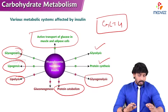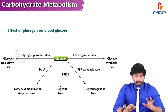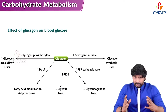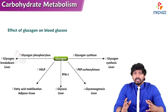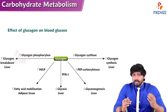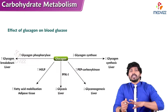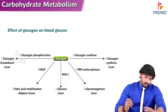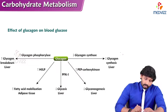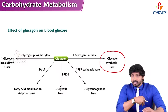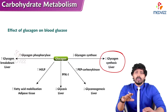Now, what about glucagon? As mentioned, glucagon comes into action when there are low blood glucose levels. In the well-fed state, we do not want any pathway involved in production of glucose. In that condition, glucagon decreases glycogen synthesis in the liver. However, in the well-fed state, glucagon has essentially no major role.